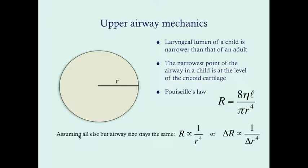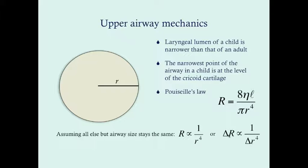Assuming viscosity and length remain essentially constant — which they do whether the patient is healthy or diseased — resistance is proportional to the inverse of the radius to the fourth power. So the change in resistance from a normal to a diseased state is proportional to the inverse of the change in radius to the fourth power. The smaller the radius gets, the more resistance you'll have — and that relationship is to the fourth power, meaning it's extremely significant. A smaller airway with edema will see resistance rise very rapidly.